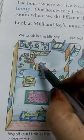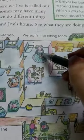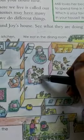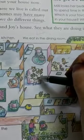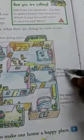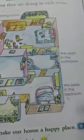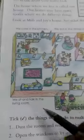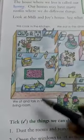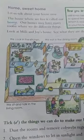For example, this is a kitchen — and in the kitchen, what do we do? We cook. And where do we eat? In the dining room, we eat our breakfast, lunch, and dinner. This is a bedroom where we sleep and take rest. We wash in the washroom. We sleep in the bedroom. And we sit and talk in the living room with our friends and family members.